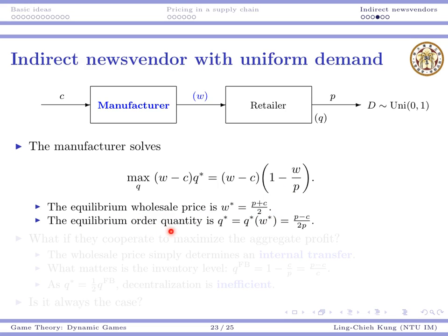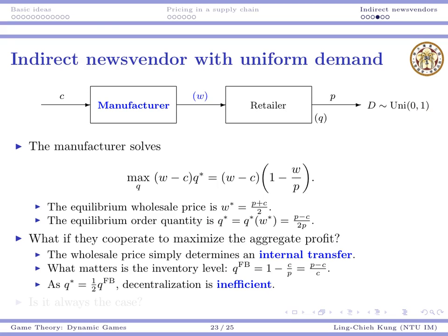With the equilibrium wholesale price, the equilibrium order quantity is found by plugging w* in, yielding (p − c) / (2p). This equals one-half times (p − c)/p, which is positive and less than one, so the equilibrium q* is reasonable — it's positive and doesn't exceed maximum possible demand.